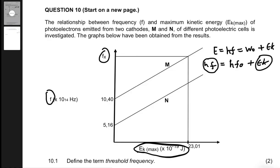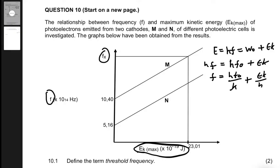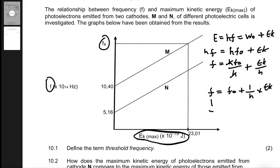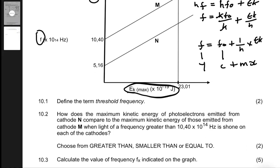On the y-axis we have h multiplied by f, and on the x-axis we have EK. But since we want just f, we divide everything by h. This gives frequency equals threshold frequency plus one over h multiplied by EK max. In straight-line form this is y equals mx plus c, where the y-intercept is the threshold frequency and the gradient is 1/h.